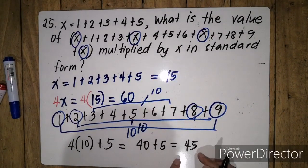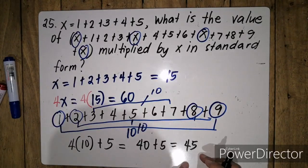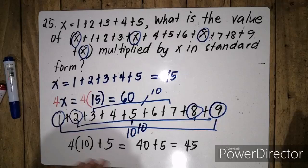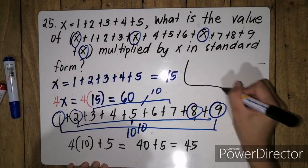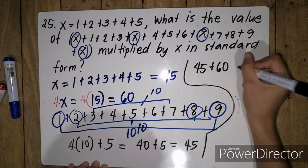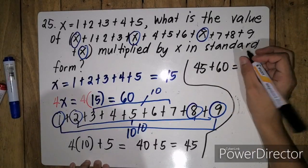I-add natin ngayon si 45 kay 60. So ang gagawin natin, 45 plus 60 is equal to 105.